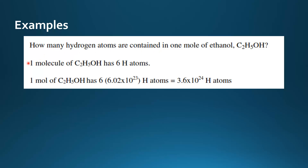Let's go through this question. One molecule of ethanol, C2H5OH, has 6 hydrogen atoms. But in one mole of ethanol we have Avogadro's number, which is 6.02 x 10²³ molecules. So in one mole of ethanol we multiply Avogadro's number by 6, because one molecule has 6 hydrogen atoms. Multiplying gives us the total number of hydrogen atoms: 3.6 x 10²⁴.